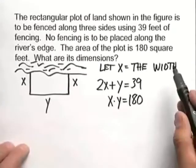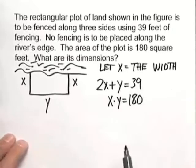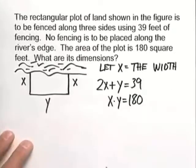So let's solve for y in the first equation. That'll give us 39 minus 2x, and then we can plug that into our area equation.